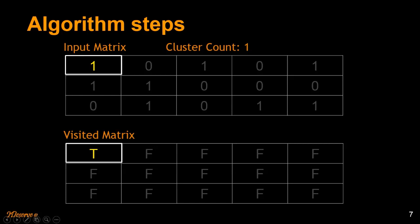The depth first search navigates to all connected elements from the current position. From the first node there is only one connected element. We move down, and if the element hasn't been visited we mark it as true and continue the DFS. From there, there is only one possible way, so we go right and mark that as visited. Then we see two possible ways to explore.